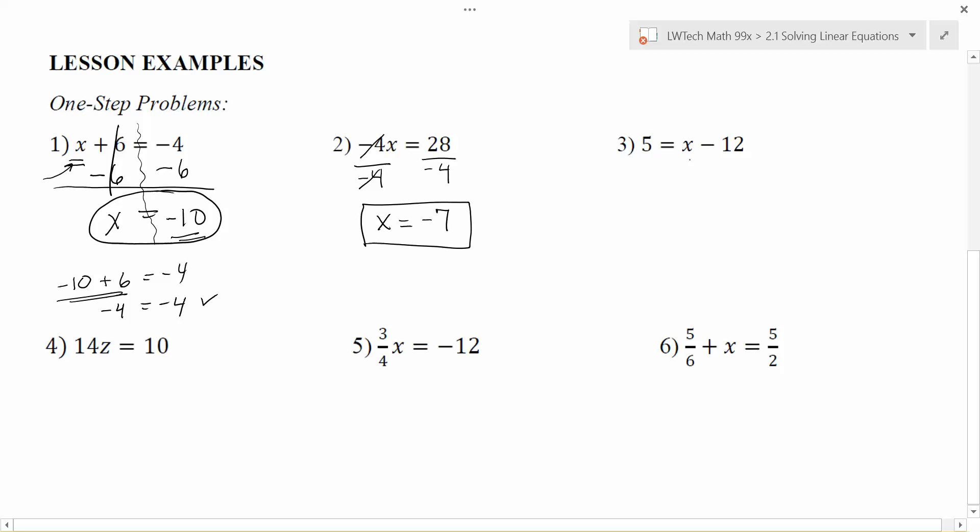As we go to solve, remember that wherever the x is, that's where we have to try to get it by itself. Right now, the problem is that 12 is being subtracted. So it's the 12 that needs to move in this problem. Right now it's a minus 12. So to undo it, we do its opposite operation, which is to add 12. On the left hand side, 5 + 12 is 17. On the right hand side, my x is still there, but -12 + 12 gives me zero. So this part dropped out of the equation. And what I'm left with is x equals 17.